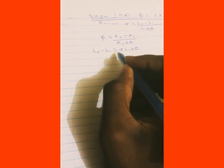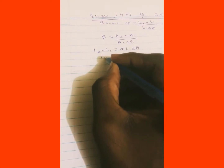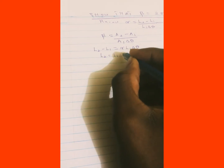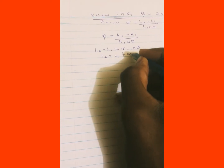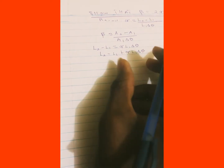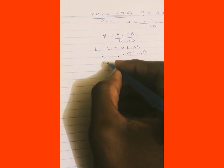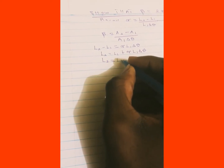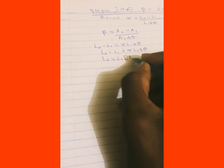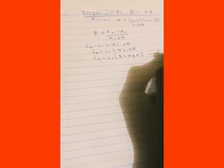When we take L1 to the right-hand side, we have L2 is equal to L1 plus alpha times L1 times the change in temperature. When we factor out L1, we have L2 is equal to L1 times the quantity 1 plus alpha times the change in temperature. This we can call equation 2.